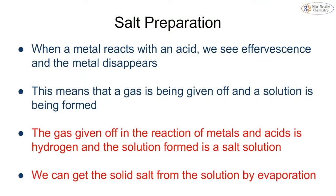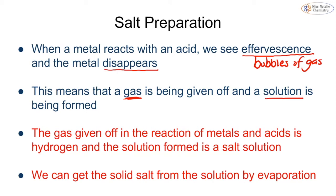When a metal reacts with an acid, what we physically see is effervescence — a proper scientific word for the bubbles of gas. We also see the metal appearing to disappear; what's actually happening is we're getting a gas from the bubbles and the metal is dissolving into the acid, forming a salt solution. Most of these solutions are colourless, but sometimes they can have a colour. The gas given off is hydrogen, and the solution formed is a salt solution.